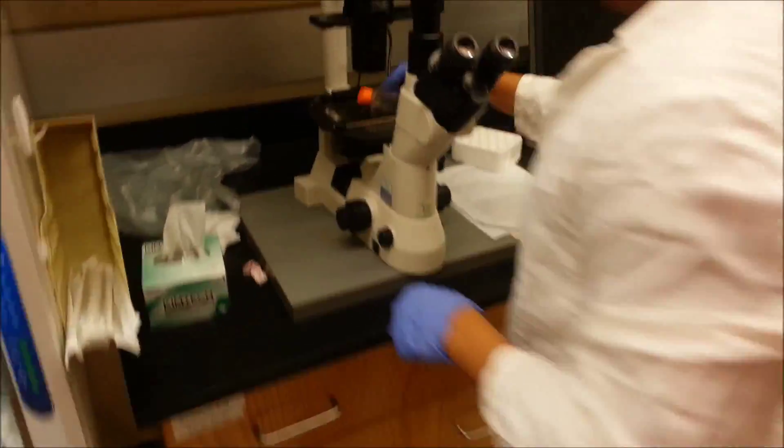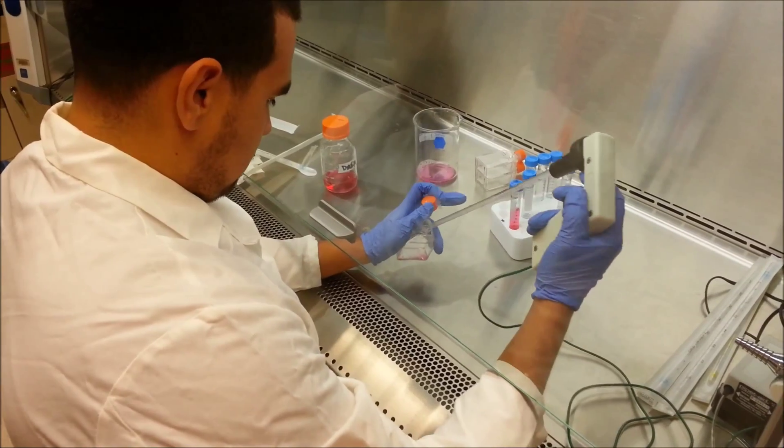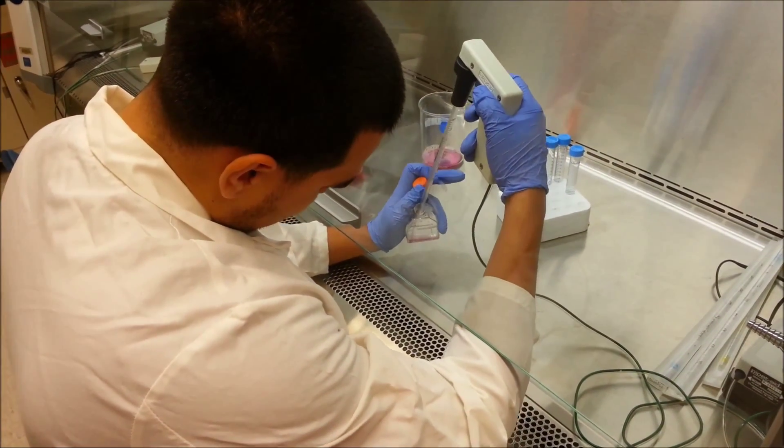Take the flask to an inverted microscope and watch them. Once they start to appear round, remove most of the trypsin.